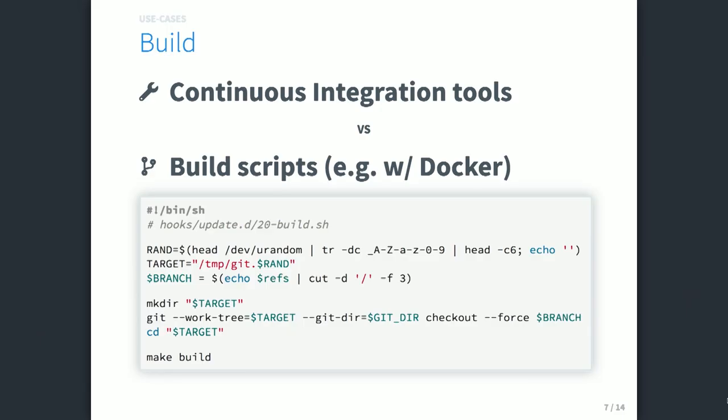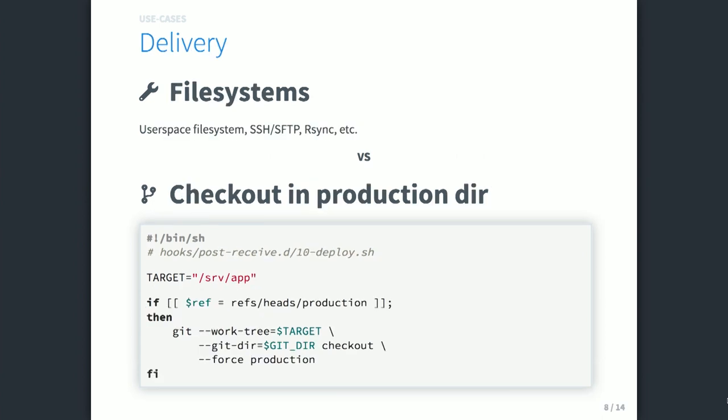You can do builds with a Docker container, for example, and it works very well. You can make delivery and packages directly on your staging or production server, because you probably rely on rsync, SFTP, or whatever to deliver your stuff. But pushing to production with Git is as simple as checking out your production branch in your production folder and restarting your app — and everything runs.